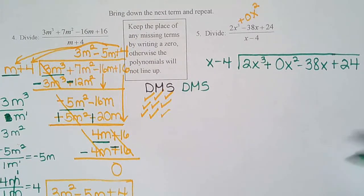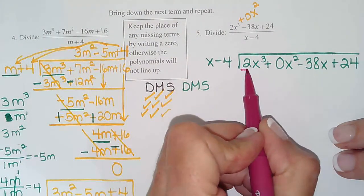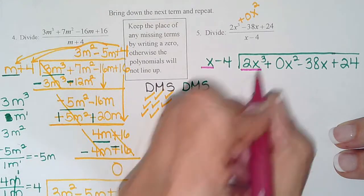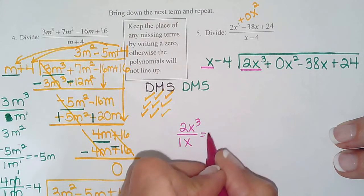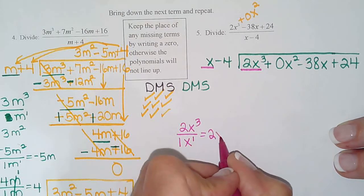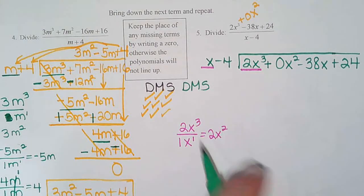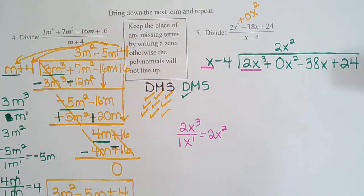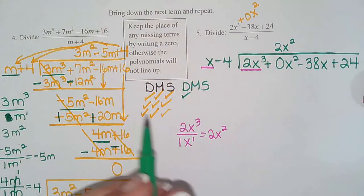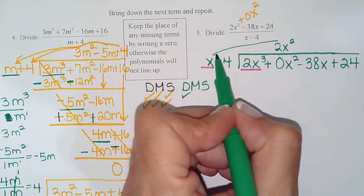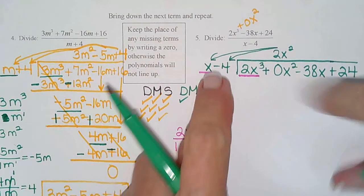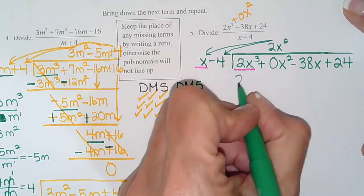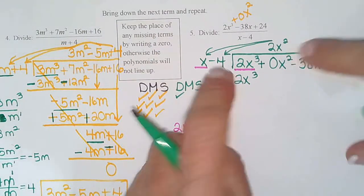So divide, let's use a different color here. Divide the front term by the front term. So this is going to be 2x cubed divided by 1x. 2 divided by 1 is 2. 3 minus 1 x squared. So I go above the x squared term and write 2x squared as my first quotient. And I check off the division. So everybody do the first step right. So then I'm ready to multiply. So this would be 2x to the third, positive, and negative 8x squared.